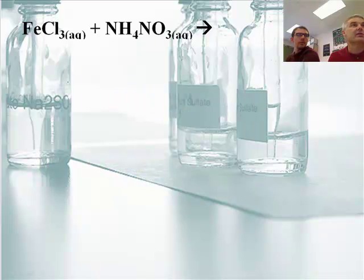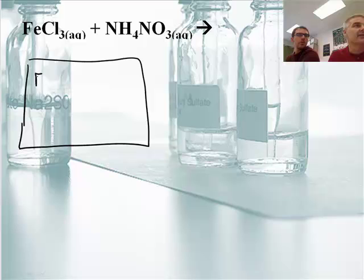All right. So we have FeCl3 and NH4NO3. All right. Scratch pad. Scratch pad. A little box. A charge box, maybe. You've got Fe, and then you've got Cl. You've got NH4, and you've got NO3.